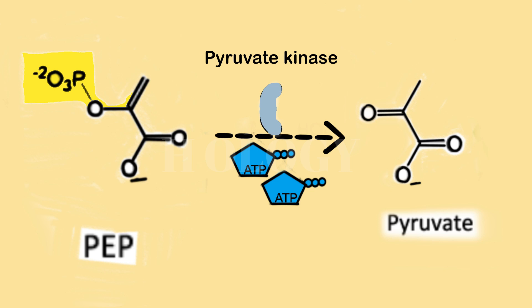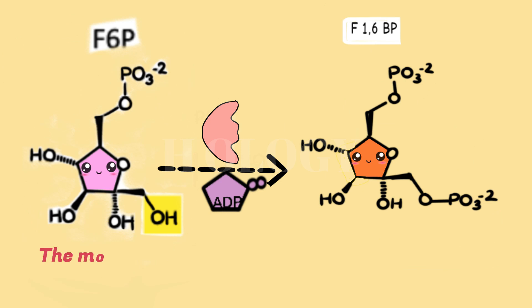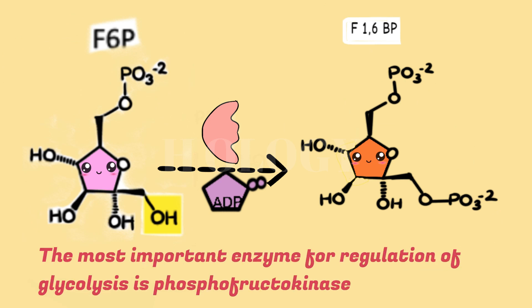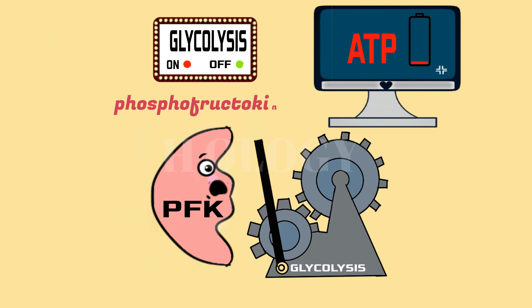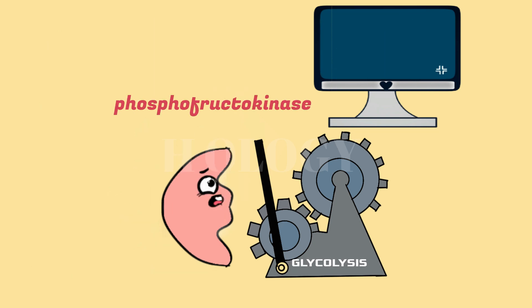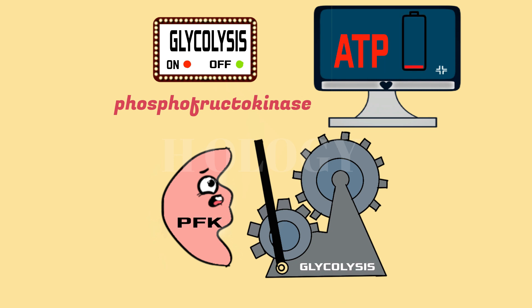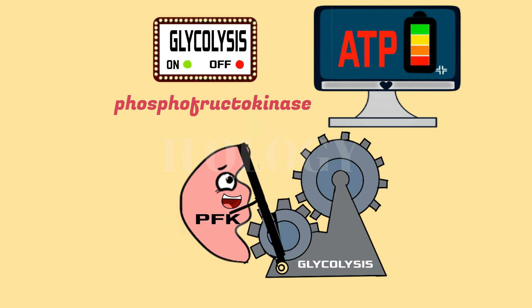The most important enzyme for regulation of glycolysis is phosphofructokinase, which catalyzes the formation of fructose-1,6-bisphosphate. The activity of phosphofructokinase is increased whenever the cell's ATP supply is reduced, or when ATP breakdown products such as ADP and AMP are in excess. Phosphofructokinase speeds up or slows down glycolysis in response to the energy needs of the cell.